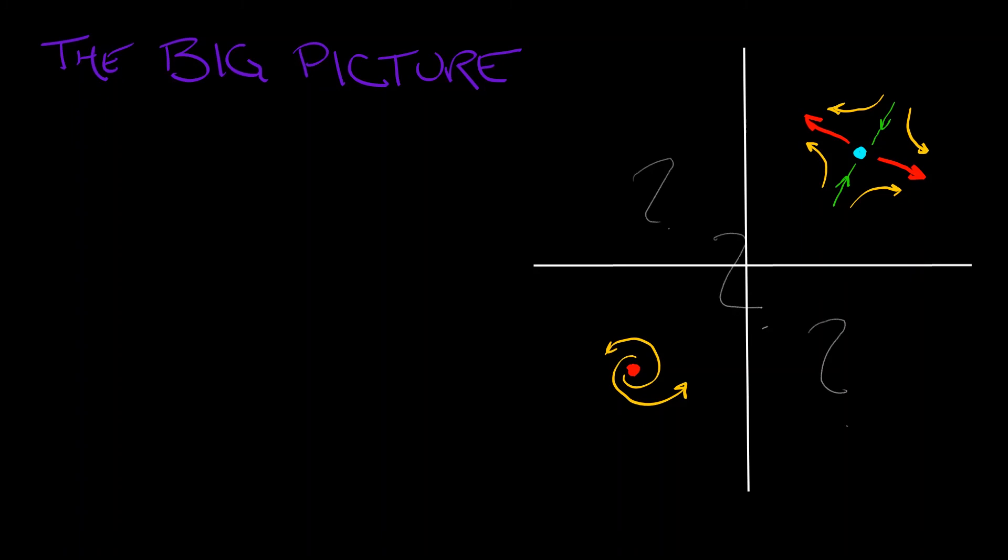Well, one tool at your disposal is, as always, Occam's razor. Keep it simple. What is the simplest way of filling in this local picture in order to get a global structure?